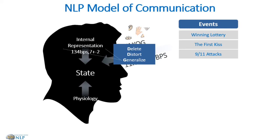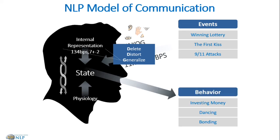Remember that's based on my 134 bits of information, which can be totally different to yours. People can go to the same party and have different experiences because they delete, generalize, and distort the information based on their own internal filters. That internal representation is then coupled with our state and our physiology to determine our external behavior. Our state would be a happy state, sad state, and so forth, while physiology refers to how you stand, how you carry yourself — whether your shoulders are slouching or you're standing up proud, shoulders back, chest out.